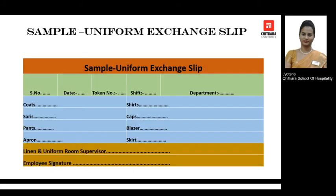This is the sample for the uniform exchange slip. It is a small slip containing the serial number, date, token number, shift, and department of the employee. It also records which article the employee has deposited — whether it is a shirt, trouser, blazer, skirt, apron, or tie. This slip must be signed by the linen and uniform room supervisor as well as the employee, confirming that both agree on the entry. The next day, the employee simply shows this slip to the uniform attendant and is handed the clean fresh uniform for the shift.